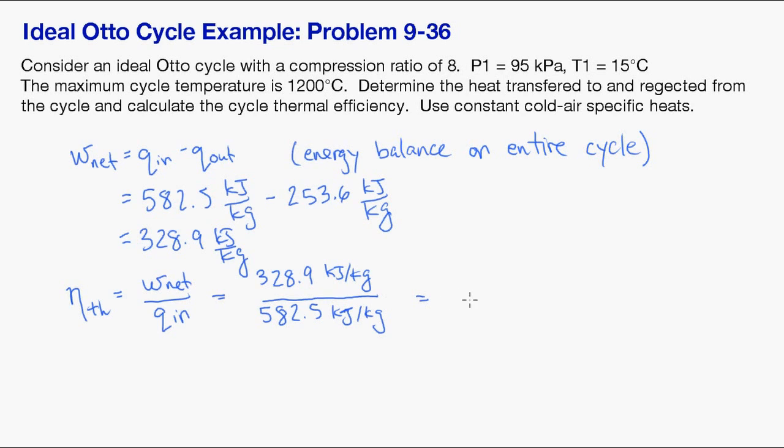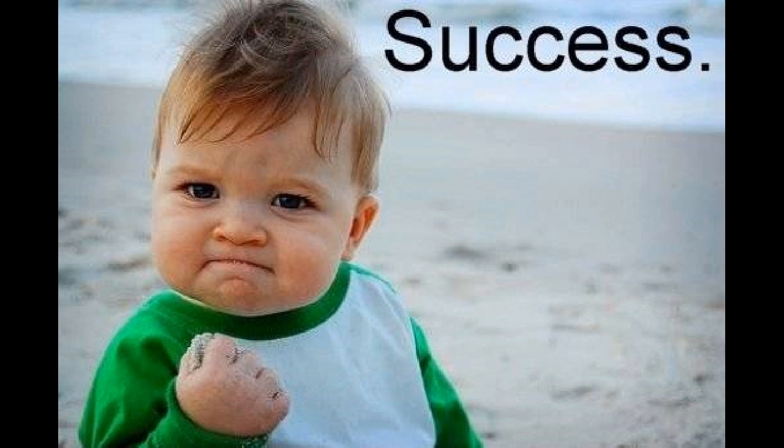And we find that the quotient gives us 56.5%. So here we've solved an ideal Otto cycle successfully.